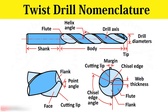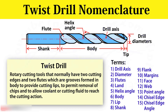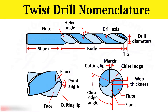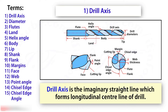In today's session we will learn about twist drill nomenclature. Twist drills are rotary cutting tools that normally have two cutting edges and two flutes, which are grooves formed in the body to provide cutting lips, to permit removal of chips, and to allow coolant to reach the cutting action. They are identified by shank style. The figure shows a schematic of design features for a twist drill and the following terms are used to describe it.